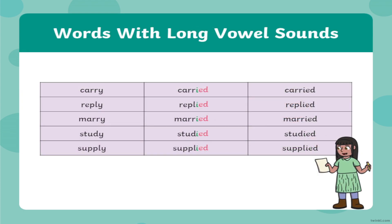We have another type of verb. As you can observe in the first column, what is common to these verbs is that they end in the consonant '-y.' You can observe in the first column: carry, reply, marry, study, and supply. To change these from present to past, we drop the '-y,' replace it with '-i,' and add the suffix '-ed.' The past forms are: carried, replied, married, studied, supplied.